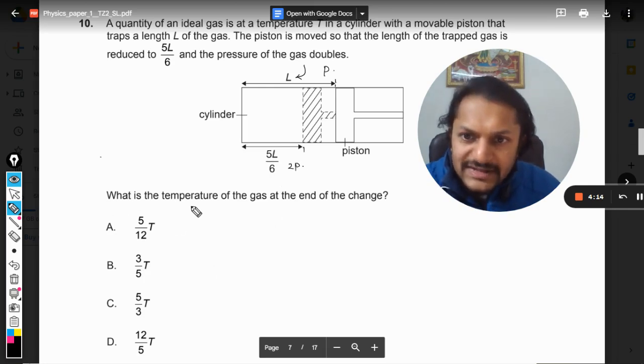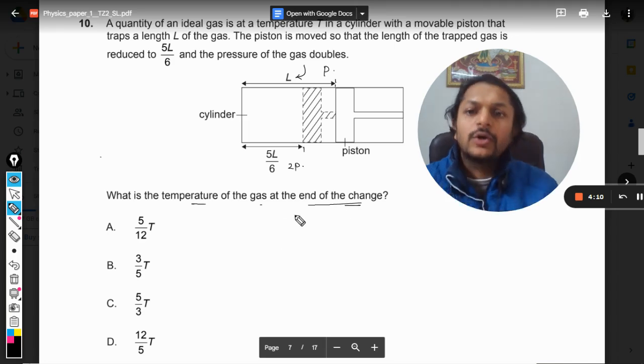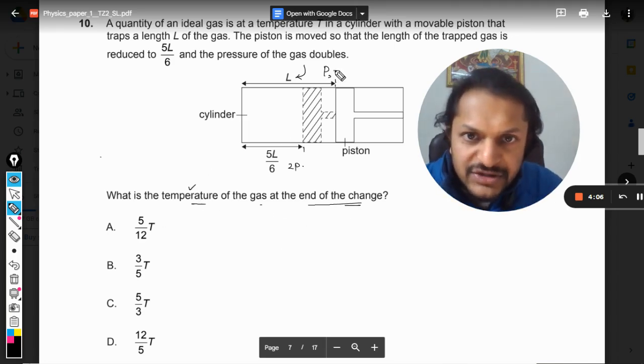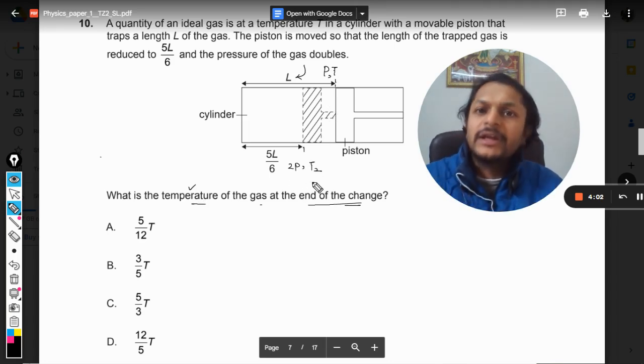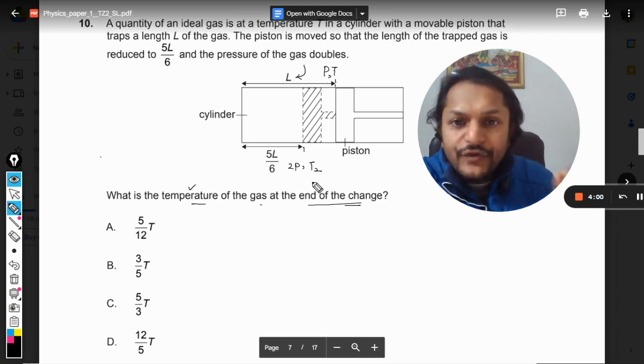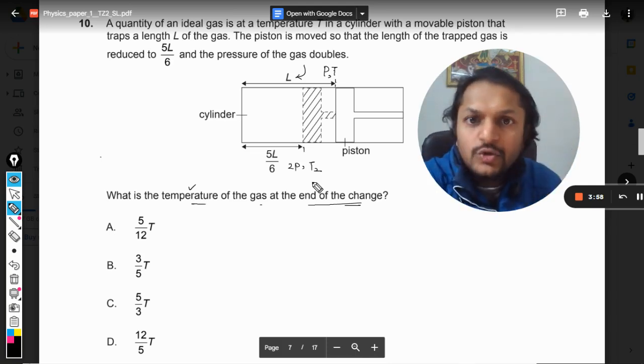What is the temperature of the gas at the end of the change? So we need to comment on the temperature. Earlier the temperature is given as capital T, but now the temperature is not known, so I'm just calling it T2. So we have to find the value of T2 in terms of T.